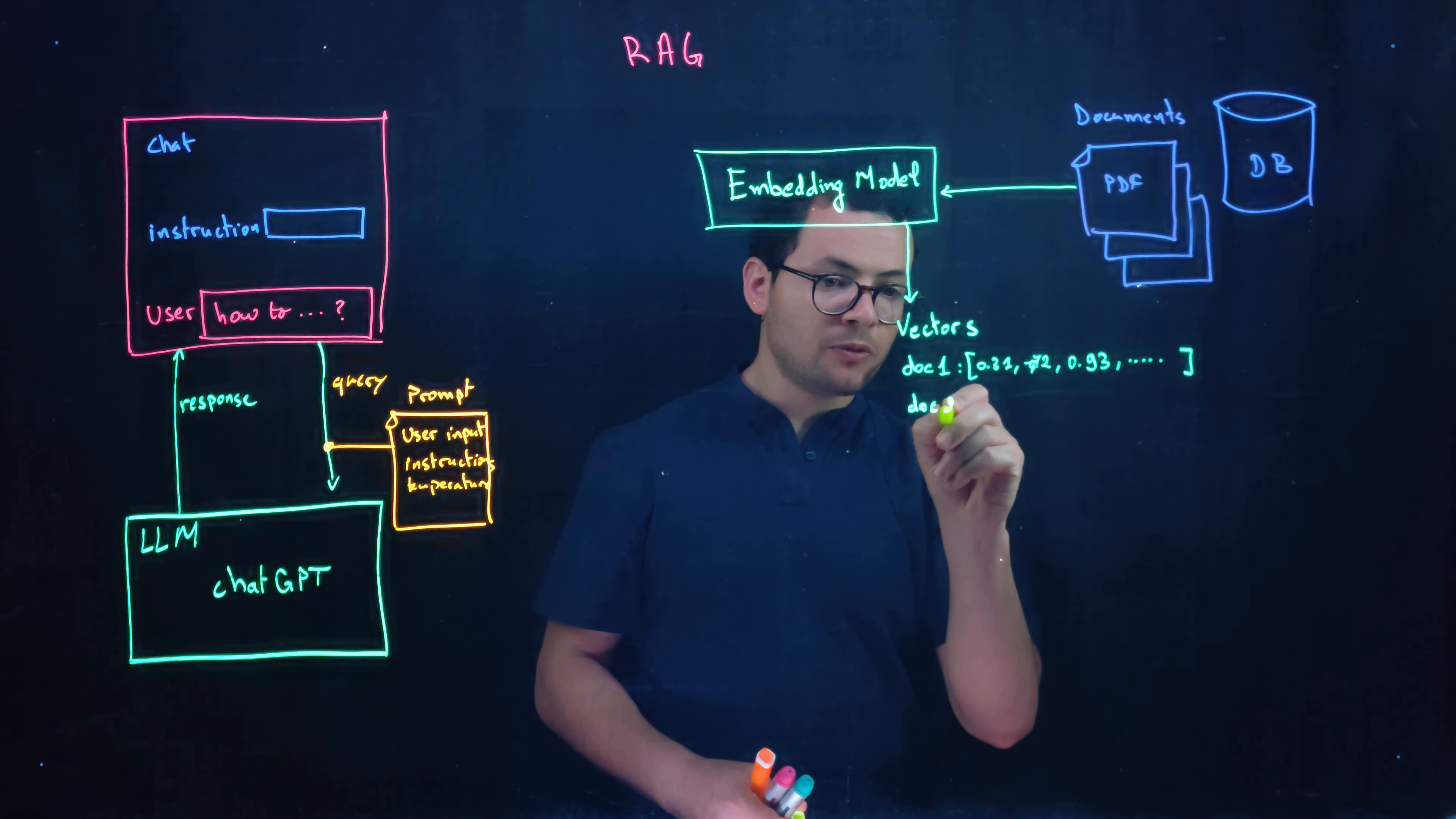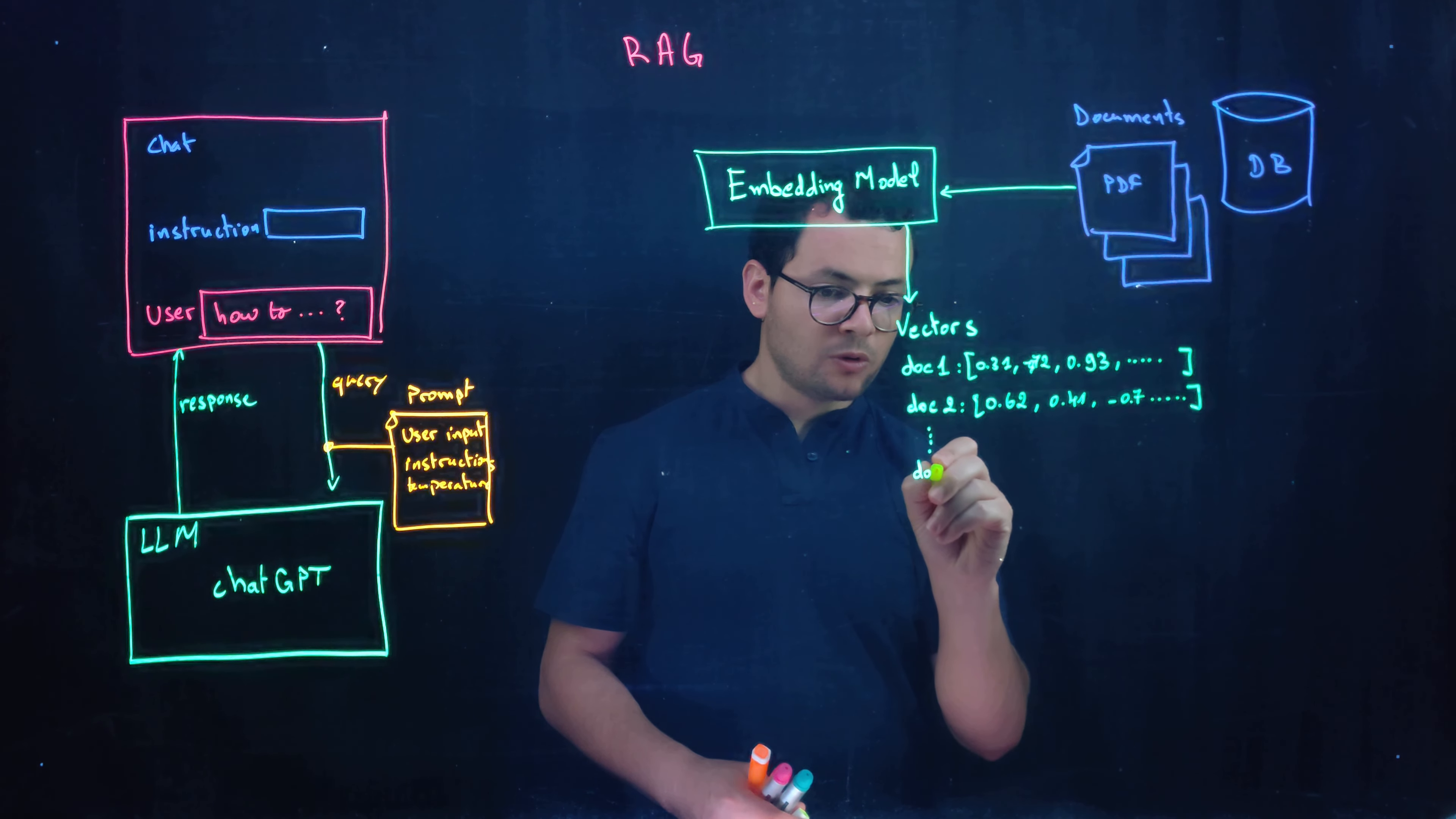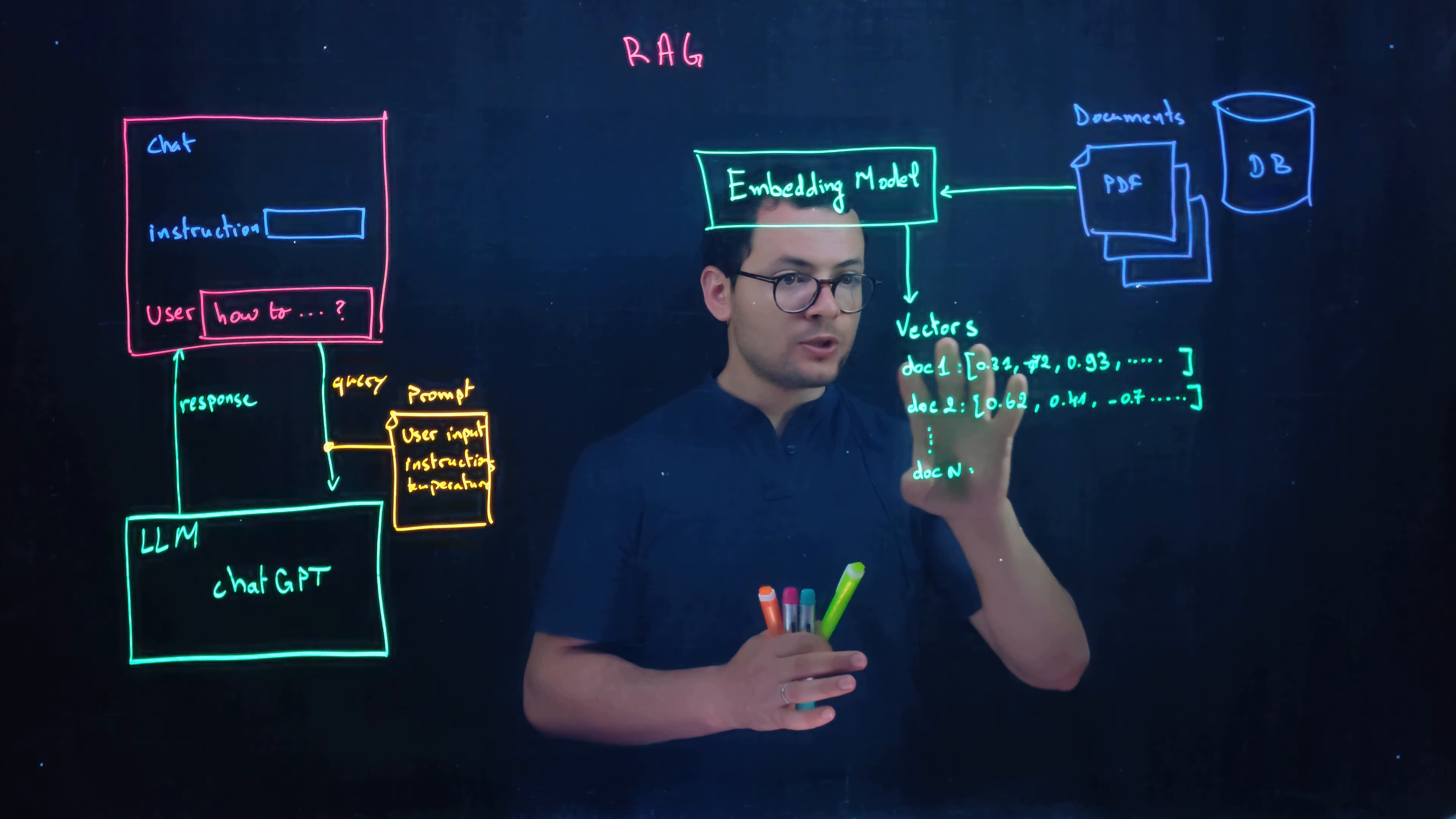Then the same thing will be for document number two. It would have another vector representation and so on until we hit here document number n. So at this step our documents now are indexed using those vectors.